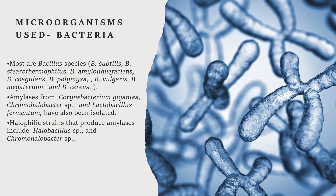Amylase producing microorganisms are bacteria and fungi. In bacteria, Bacillus species include Bacillus subtilis, Bacillus stearothermophilus, Bacillus amyloliquefaciens, Bacillus coagulans, Bacillus polymyxa, Bacillus vulgaris, Bacillus megaterium, and Bacillus cereus. Amylases from Corynebacterium gigantea, Chromohalobacter species, and Lactobacillus fermentum have also been isolated.